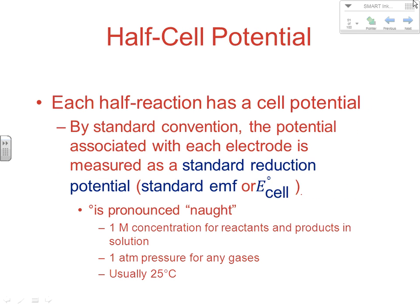Each half-cell reaction has a cell potential. By standard convention, the potential associated with each electrode is measured as a standard reduction potential. When you look these up in the appendix at the back of the book — Appendix D of the Brown-LeMay book — you'll notice it's called standard reduction potentials, so they're all listed as reduction potentials. The standard reduction potential is the standard EMF, or E° cell.